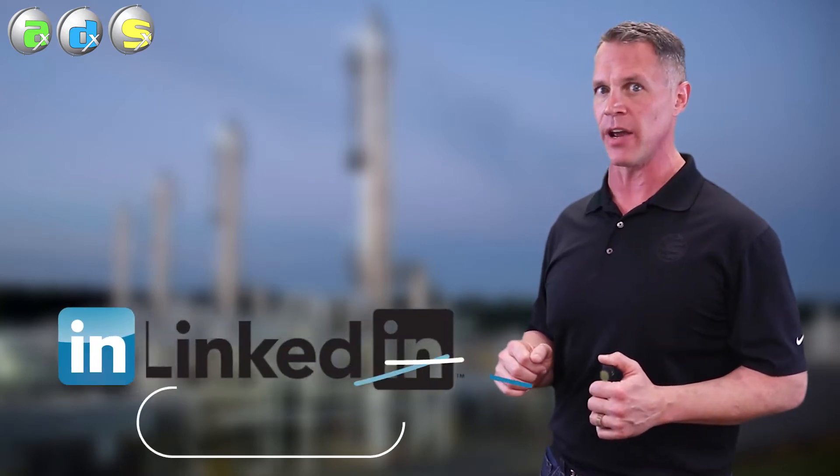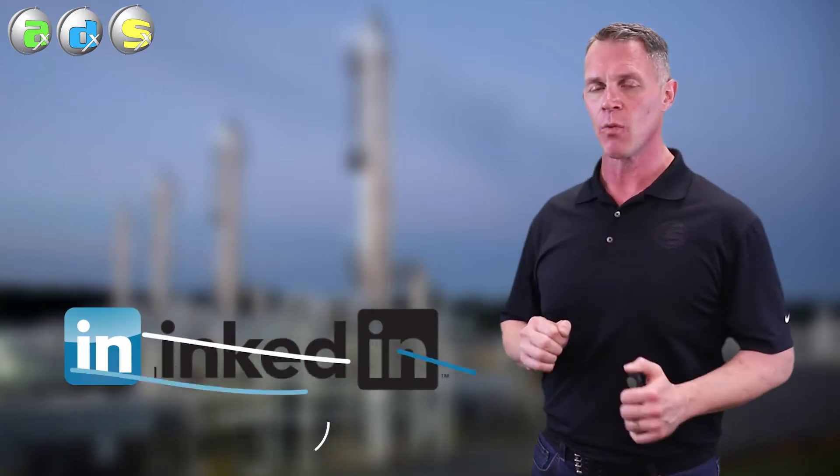Part one we talked about the absorber, we talked a little bit about rich amine piping, and now we're going to get into the good stuff - the regenerator and the reboiler. It's the most common area where we see corrosion in CO2 only plants.